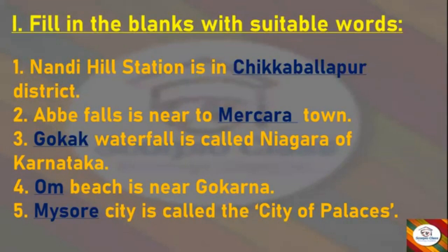Fill in the blanks. First: Nandi Hill Station is in which district? Answer: Chikuballapur. Next: Abbey Falls is near which town? Answer: Madhikere. Next: Which waterfall is called the Niagara of Karnataka? Answer: Gokak.